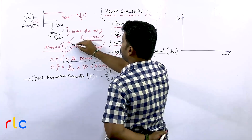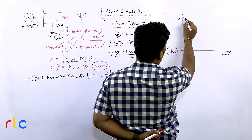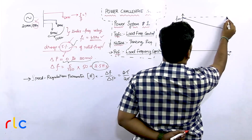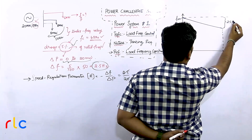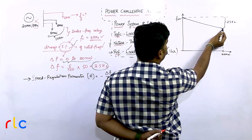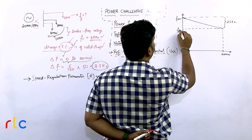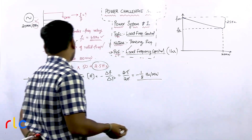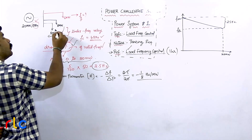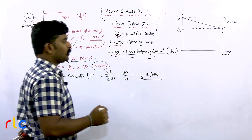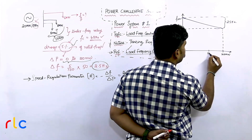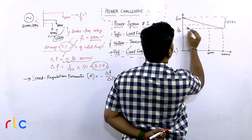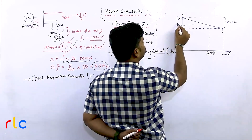According to the 5% droop, when the load varies from no load to full load, the change in frequency — this gap — is 2.5 hertz. We don't know the full-load frequency directly. He told us the change in frequency with respect to rated frequency. However, he specifically stated that when the generator is operating with 8 plus 8 = 16 megawatt, the frequency is 50 hertz. So at 16 megawatt, the frequency of the system is 50 hertz.